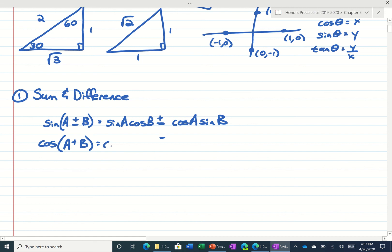For cosine, it's always the cosine of the first, cosine of the second, and then the opposite sign, and then sine of the first, sine of the second. I knew something didn't look right. If it was a difference, so subtraction sign there, you would use the opposite sign there.